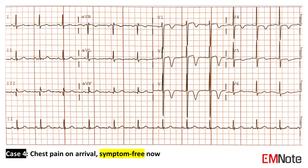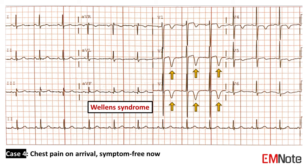Case 4: The patient presents with chest pain on arrival and is asymptomatic during ECG. The ECG shows Wellens syndrome, characterized by deep symmetrical T-wave inversions in leads V2 and V3. These ECG findings indicate critical stenosis of the proximal left anterior descending artery, LAD. Patients with Wellens syndrome are at high risk of developing a STEMI within the next few hours or days. Stress tests are contraindicated in Wellens syndrome.